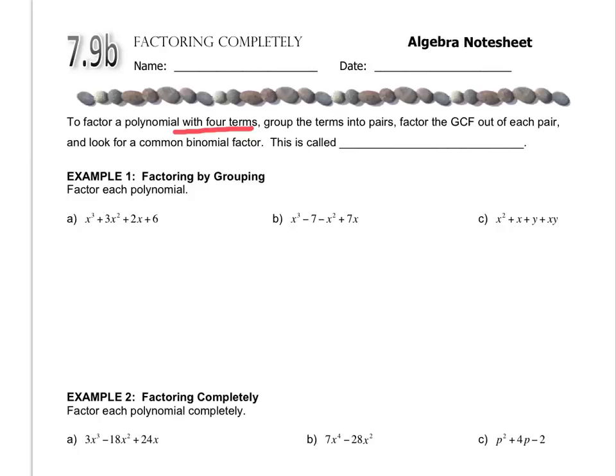To factor a polynomial when there's four terms, you're going to group the terms into pairs and then factor out the GCF of each pair. Once you factor out the GCF of each pair, you should see a common binomial factor, and that's called factoring by grouping.